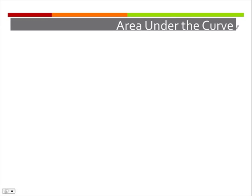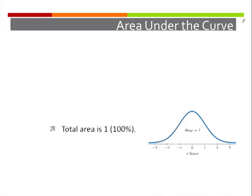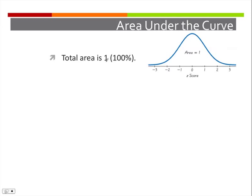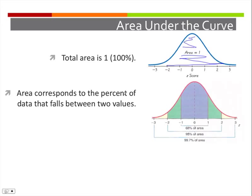Next, we talk about the area under the curve of the normal distribution. The total area under the curve is 1, which corresponds to 100%. The area corresponds to the percent of data that falls between two values. So if we're looking between z-scores of negative 1 and 1, all of this area is about 68% of the total area, meaning 68% of the data values fall between these two values.